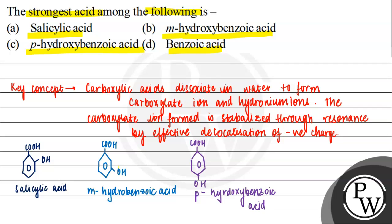We can see that the OH group is attached to each one of them, so if you consider it as an electron-withdrawing or electron-donating group, it will be difficult to identify which is the strongest acid. But if we consider the stabilization of the compound, it becomes easier. Benzoic acid is a benzene ring substituted with a COOH group and its carboxylate ion.